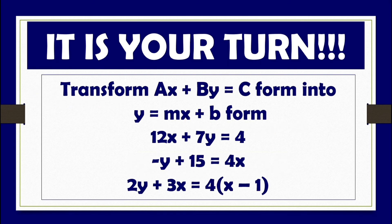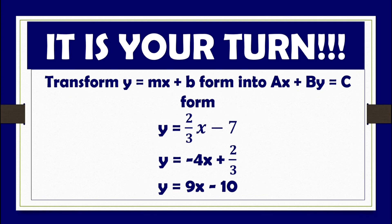Now it is your turn. Transform ax plus by equals c into y equals mx plus b for these equations: 12x plus 7y equals 4; negative y plus 15 equals 4x; and 2y plus 3x equals 4 times the quantity x minus 1. Also transform y equals mx plus b into ax plus by equals c for: y equals two-thirds x minus 7; y equals negative 4x plus two-thirds; and y equals 9x minus 10.